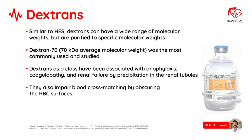Dextrans can have a wide range of molecular weights but are purified to specific molecular weights. Dextran 70 kDa was the most commonly used and studied. Dextrans as a class have been associated with anaphylaxis, coagulopathy, and renal failure by precipitation in the renal tubules. They also impair blood cross-matching by obscuring the red blood cell surfaces.